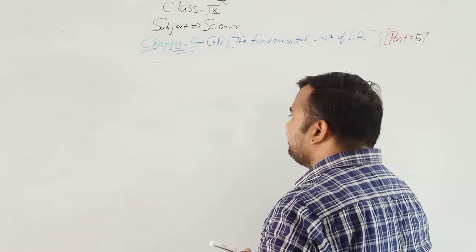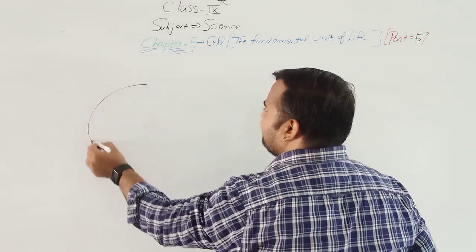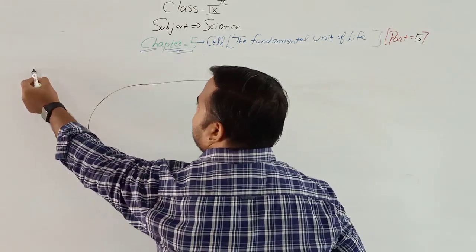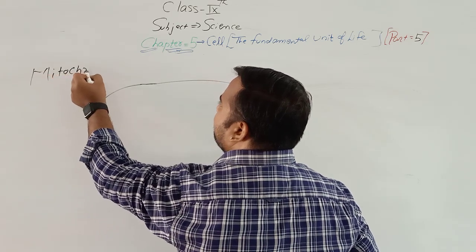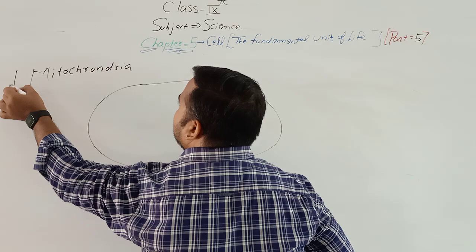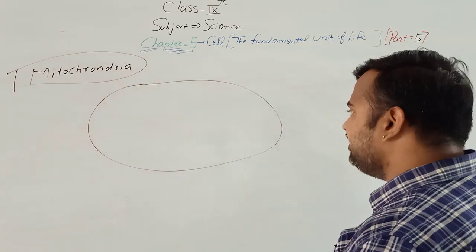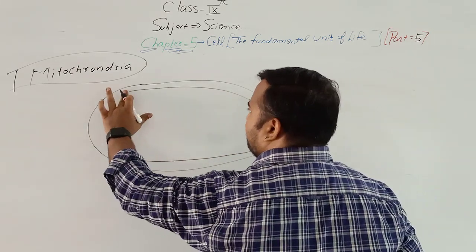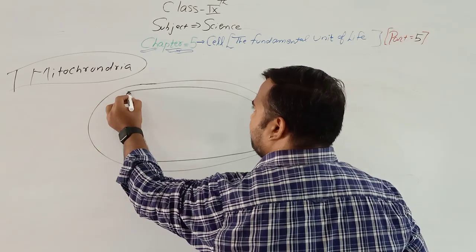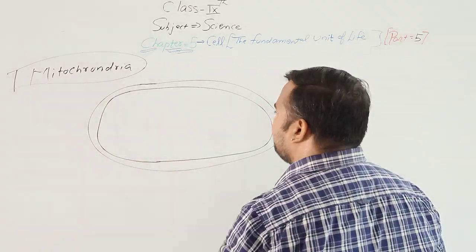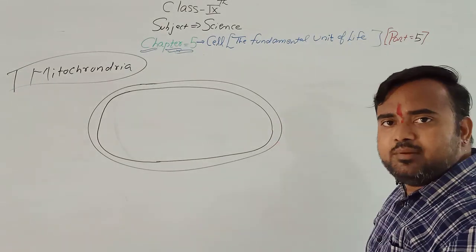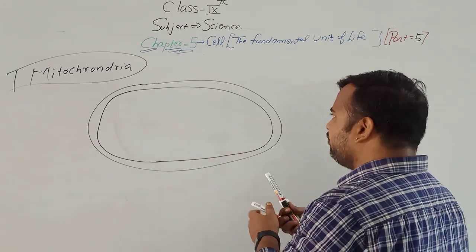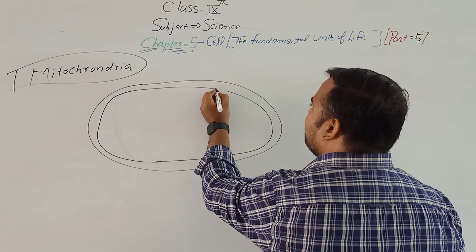Now the structure of mitochondria: mitochondria is a double-layer cell organelle. There is an outer membrane and an inner membrane of mitochondria. There would be some folds in the inner membrane of mitochondria.